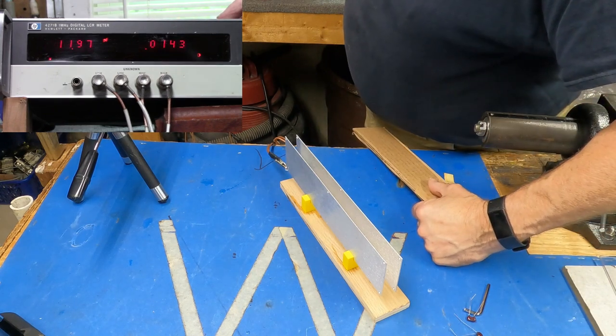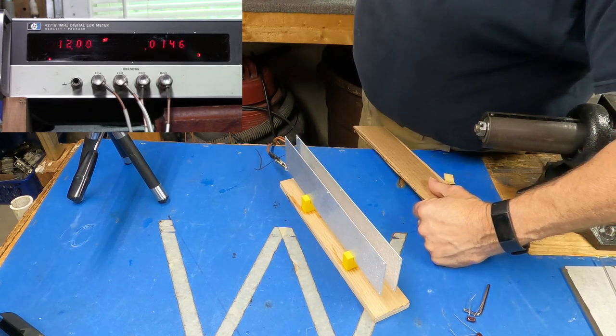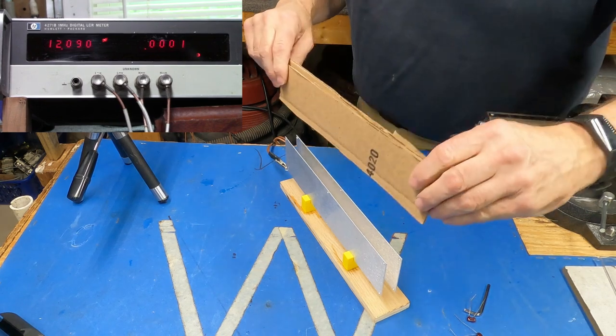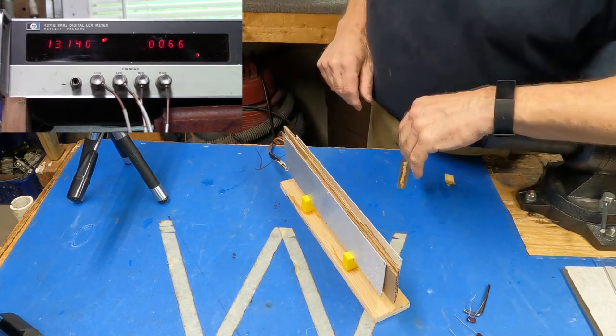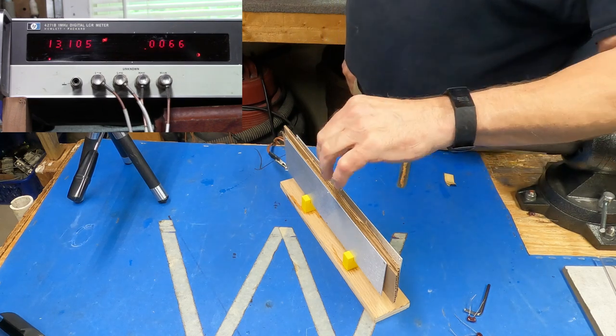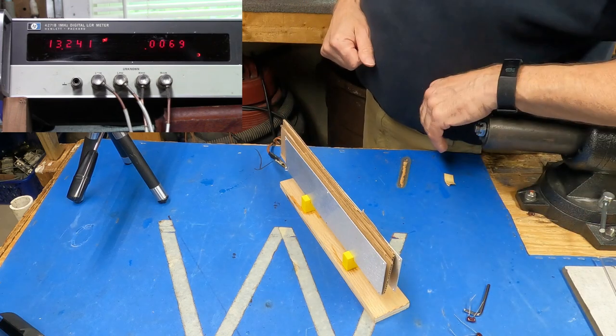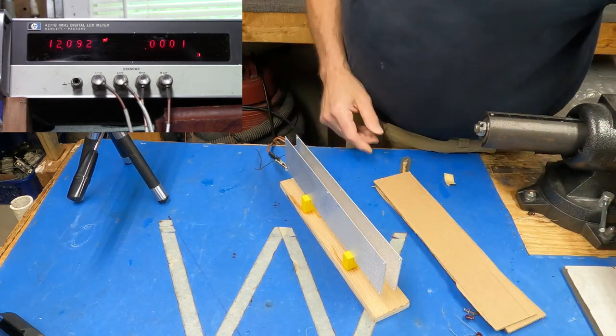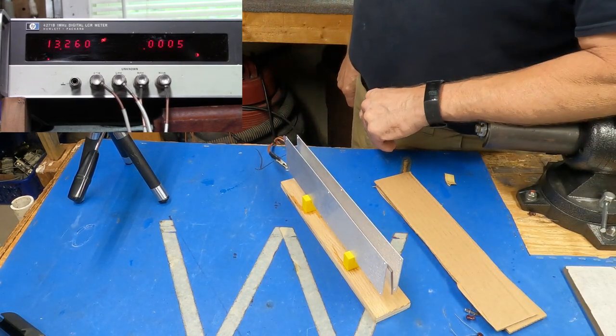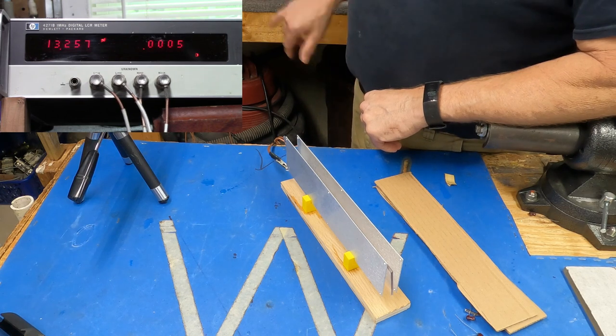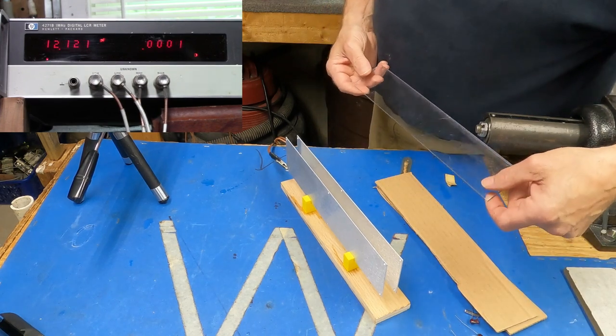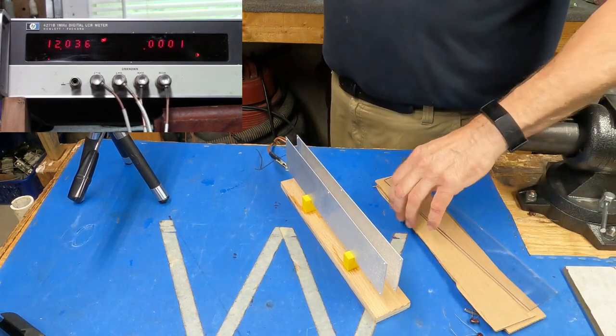Okay, so now we're up to 12 picofarads. Let's drop in the thick cardboard dielectric and see what we get. Now we're up to 13.13, and our loss was 0.007. Let me just drop in a piece of polycarbonate. Okay, we went up to 13.25, and we're still at an extremely low loss. It's better with air, but the capacitance has dropped some.